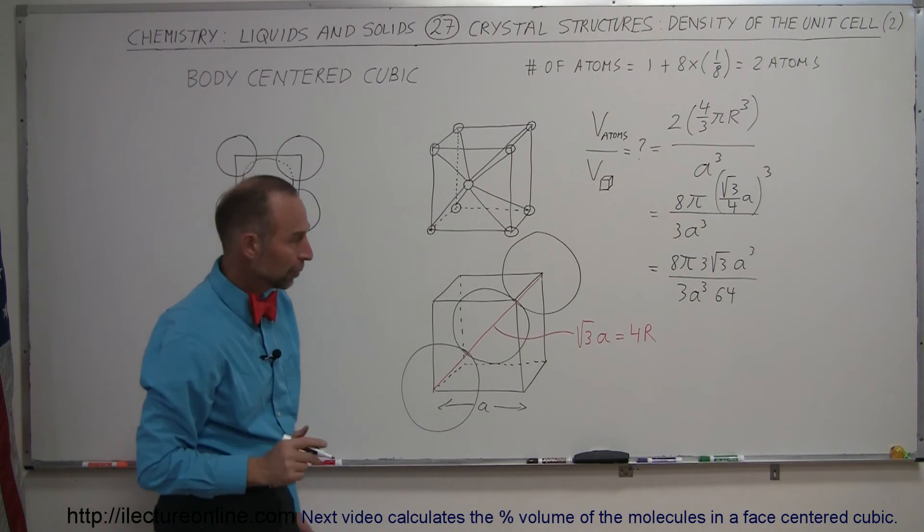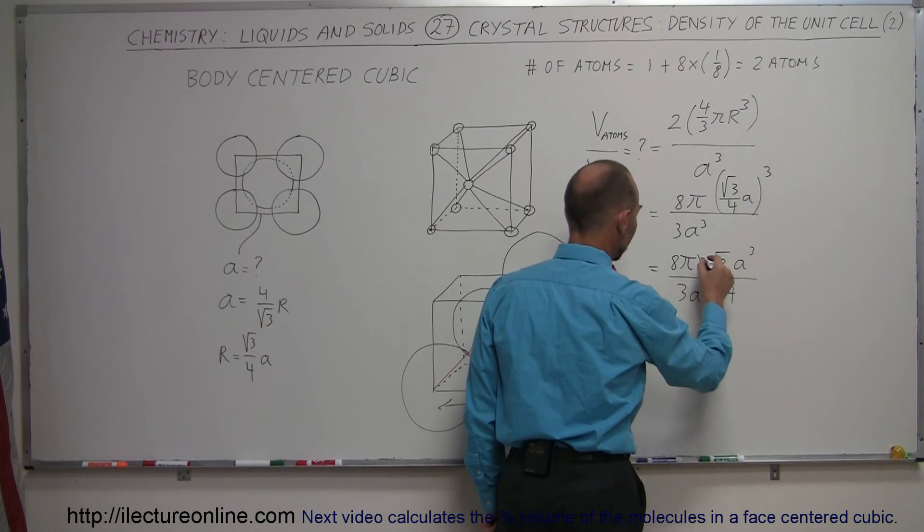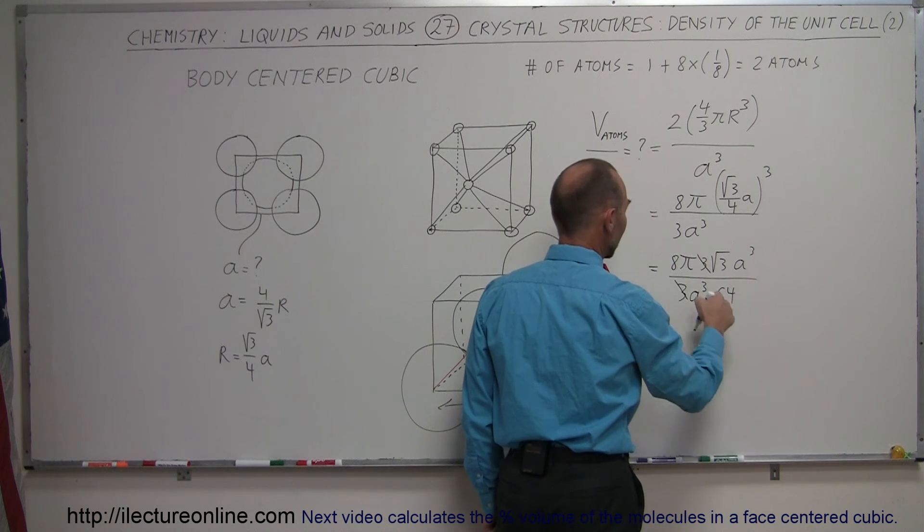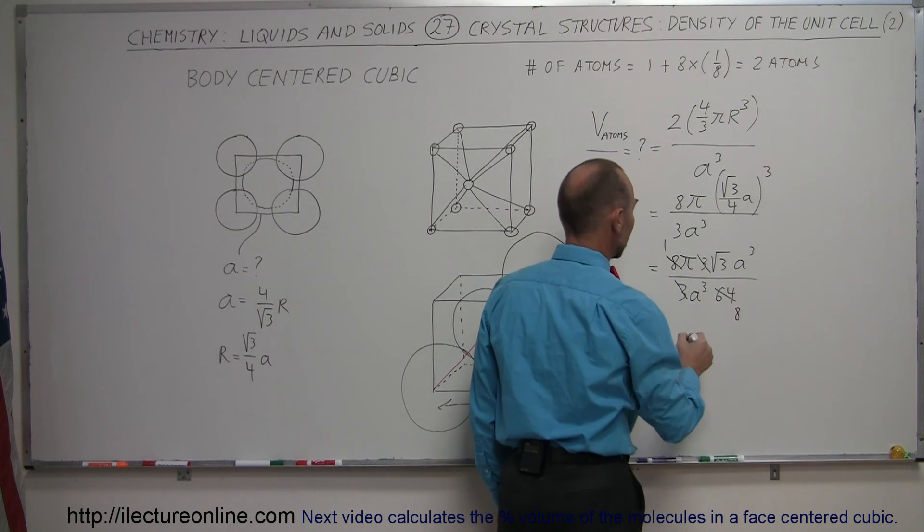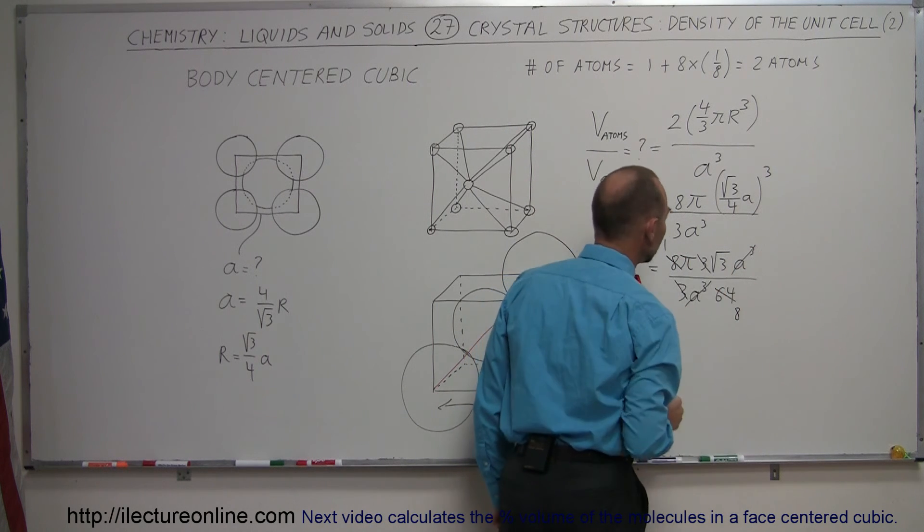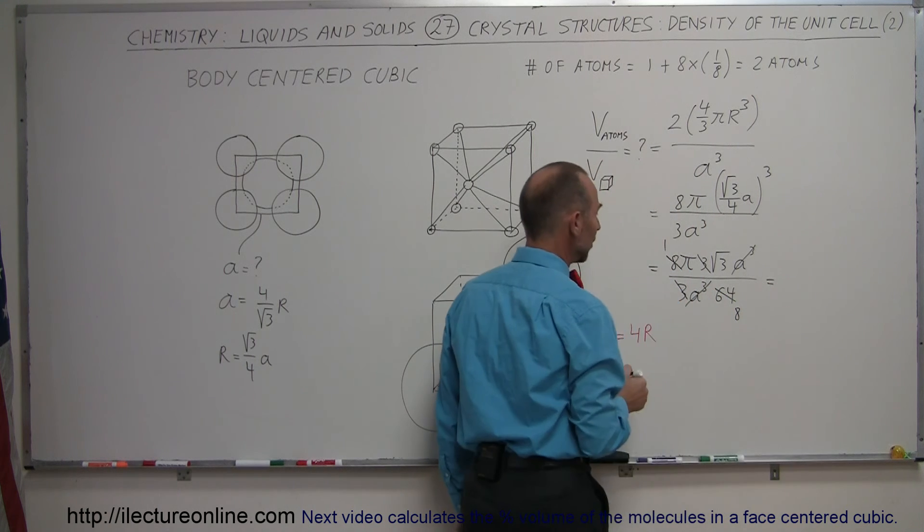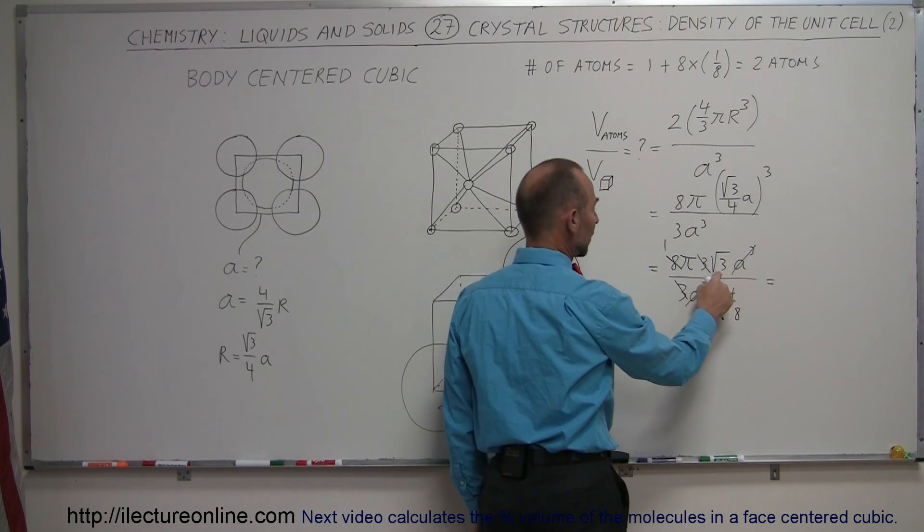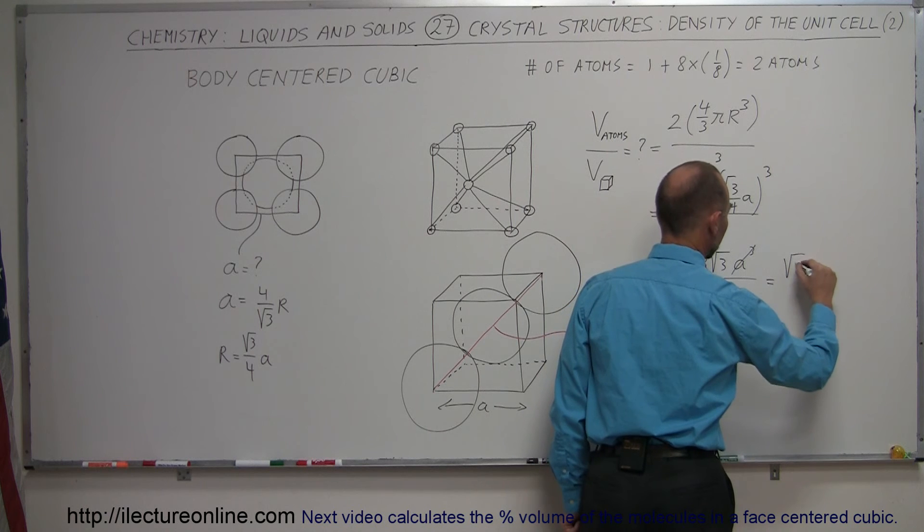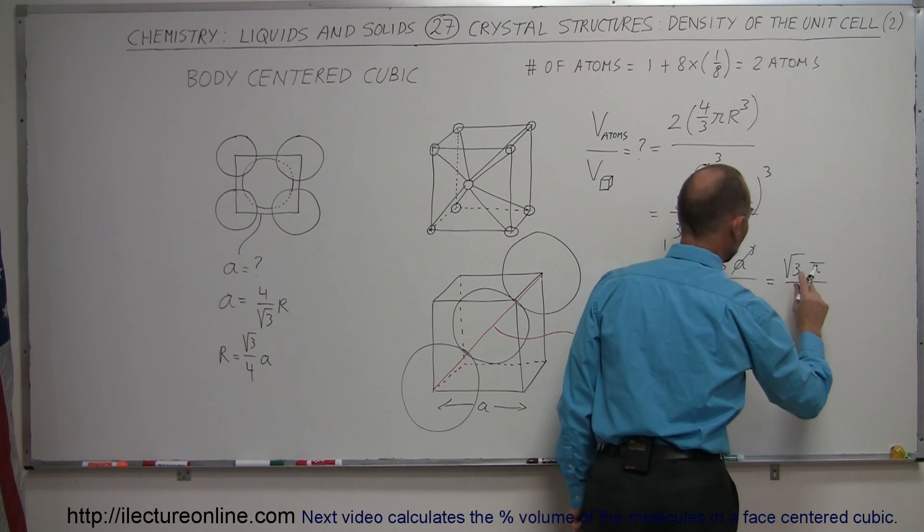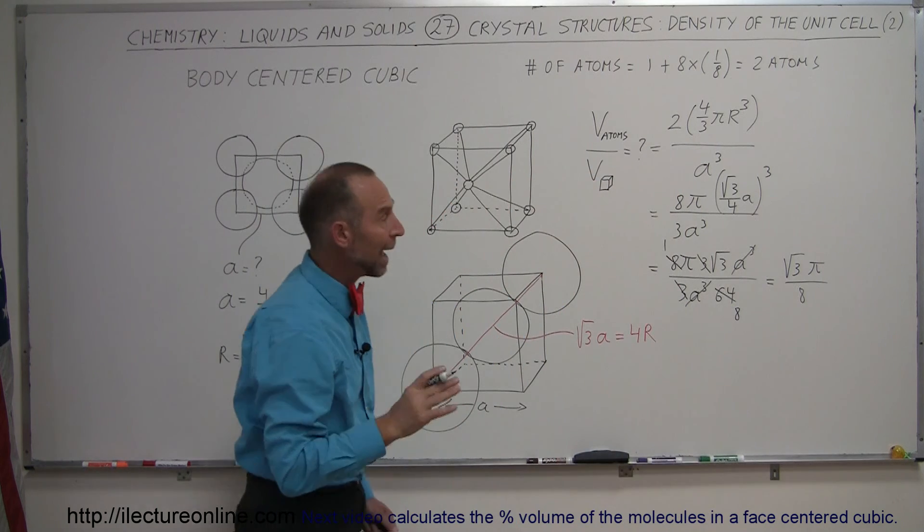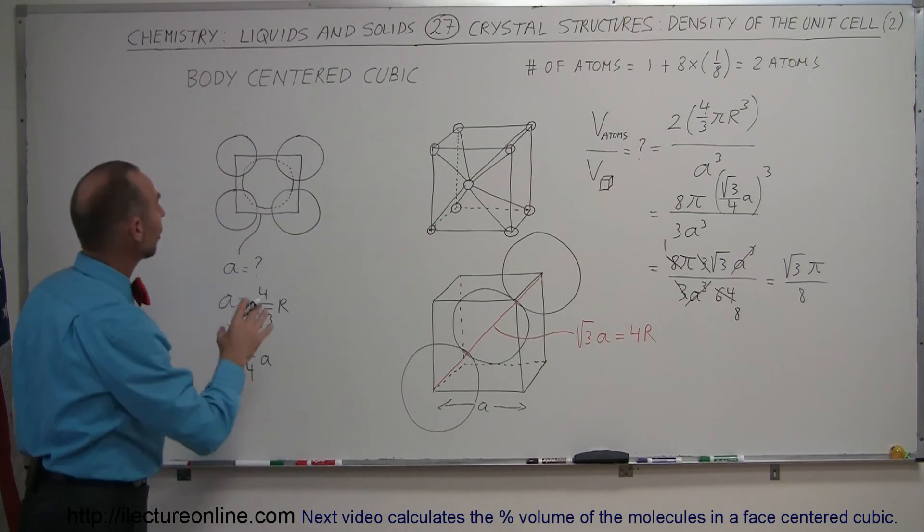So far, so good. Notice now that this three cancels out. The eight and the sixty-four, this becomes one and this becomes eight. The a cubed cancels out the a cubed. And now what we have left in this equation is the square root of three times pi, and in the denominator we have eight.